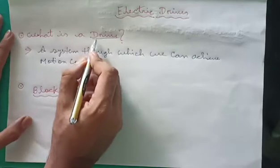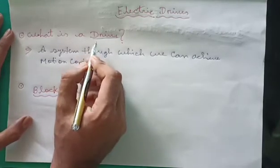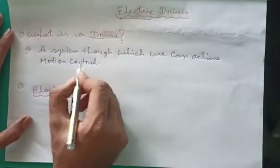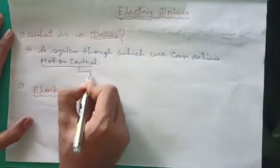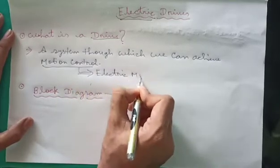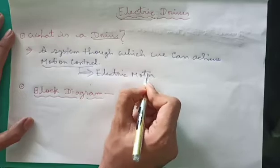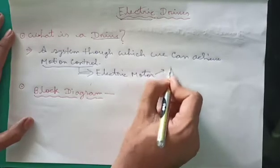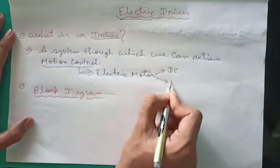A drive can be mechanical as well as electric. In our topic it is electric drive. So when this motion control is achieved by an electric motor, this is known as electric drives. The electric motor can be DC as well as AC.